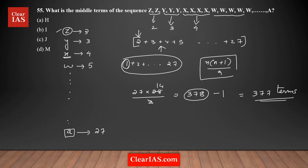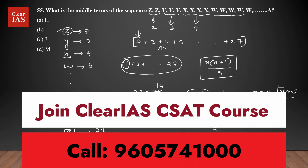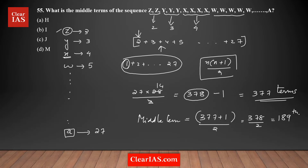Now I need to find the middle term. When there are an odd number of terms, the middle term is found by adding 1 then dividing by 2. So (377 + 1) / 2 = 378 / 2 = 189. The 189th term is the middle term of the sequence.